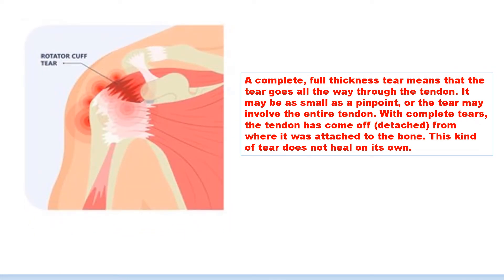A complete, full thickness tear means that the tear goes all the way through the tendon. It may be as small as a pinpoint, or the tear may involve the entire tendon. With complete tears, the tendon has come off — detached — from where it was attached to the bone.